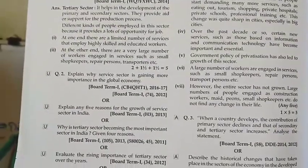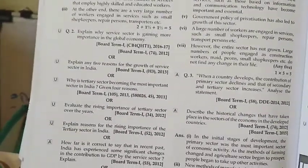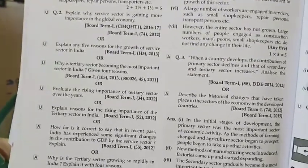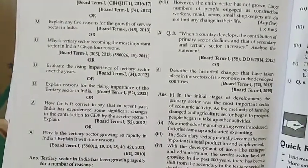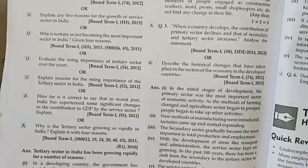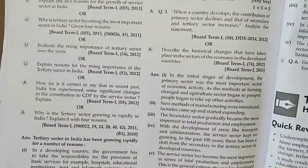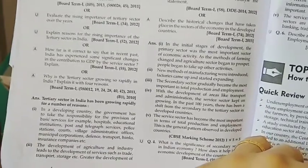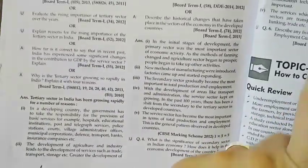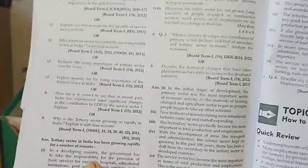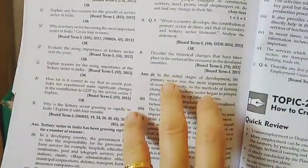Then: how is the tertiary sector different from others — educated versus unorganized workers — you have to write about both. Explain why the service sector is growing. As we saw previously: basic services, income level, and ICT — you have to write that answer in detail. This is a 5-mark question, so you will have to write down 5 points. The same points about why the tertiary sector is growing in importance need to be written here, but you need a total of 5 points.